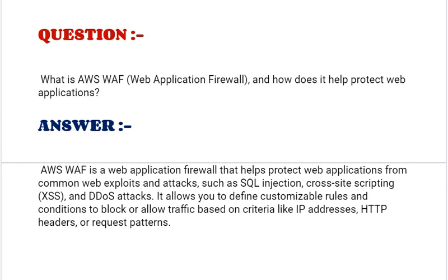Next interview question: What is AWS WAF, the web application firewall, and how does it help protect web applications? AWS WAF is a web application firewall that helps protect web applications from common web exploits and attacks such as SQL injection, cross-site scripting XSS, and DDoS attacks. It allows you to define customizable rules and conditions to block or allow traffic based on criteria like IP addresses, HTTP headers, or request patterns.